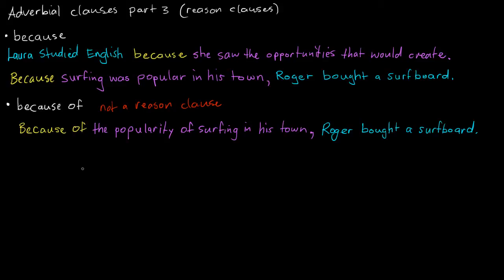But here you see, when we put the 'of' - because of - we're now with a noun, the popularity. Now this is a noun phrase: the popularity of surfing. And this is just a little prepositional phrase. So this doesn't have the subject or the verb, so it's clearly not a clause. But I thought it's worth grouping it in here.